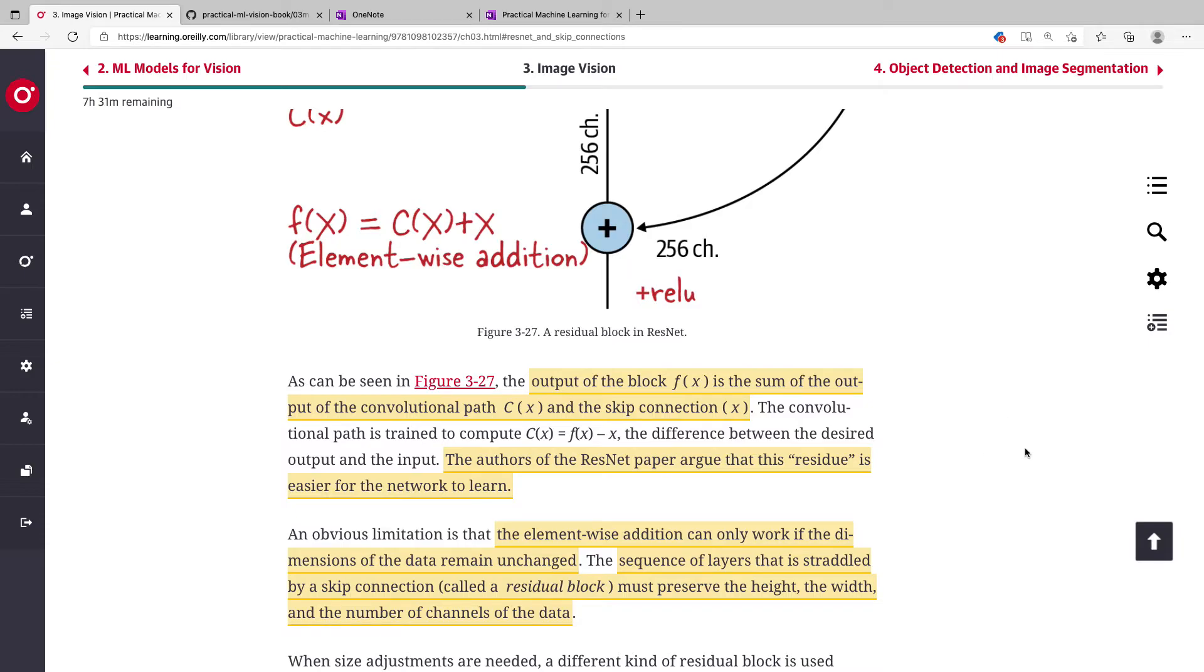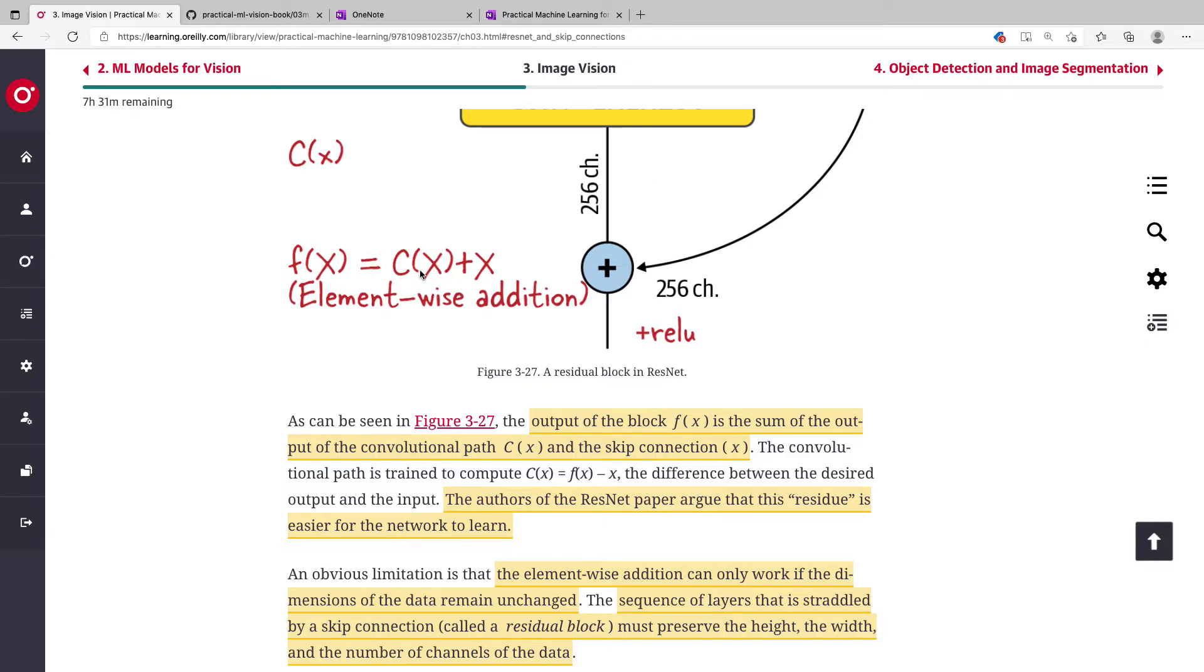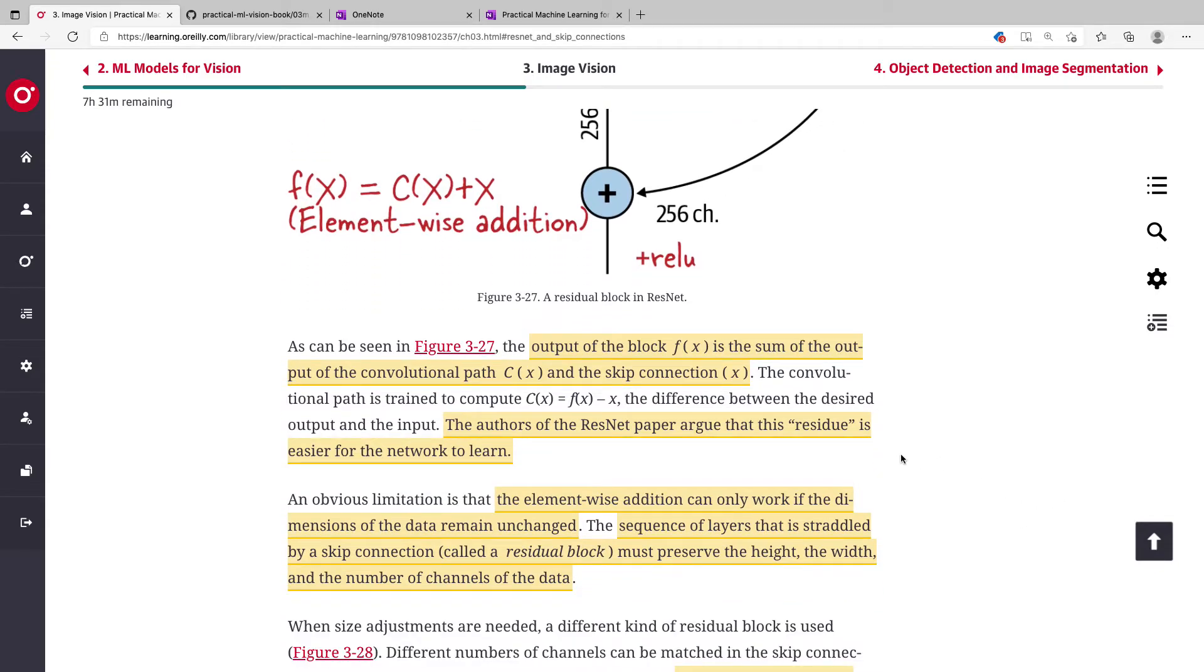The convolutional part is trained to compute C of x equals f of x minus x, so the difference between the desired output and the input. The authors argue that this residue is easier for the network to learn.